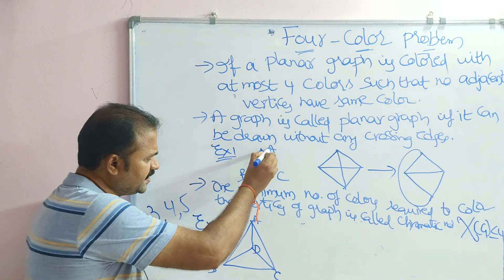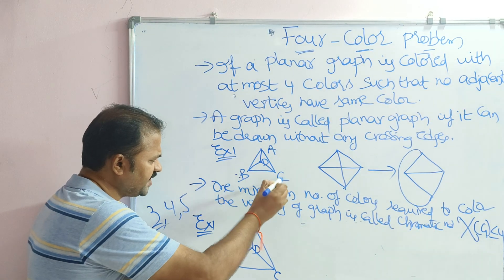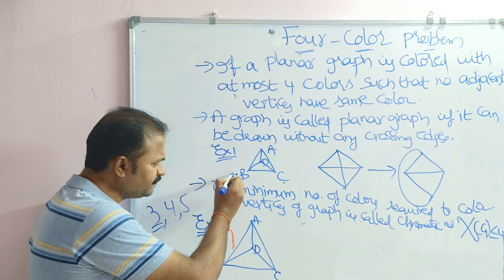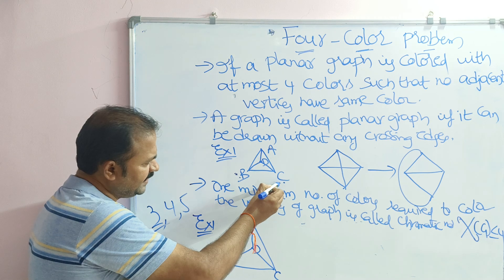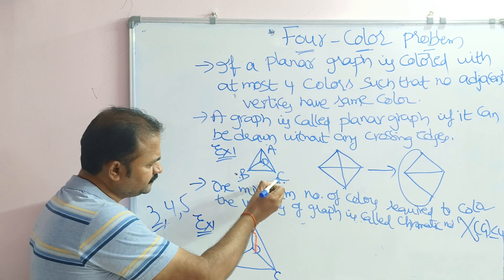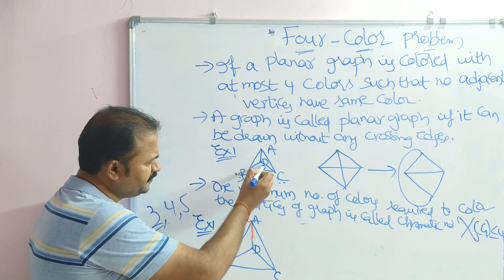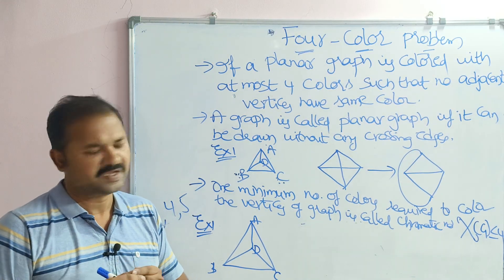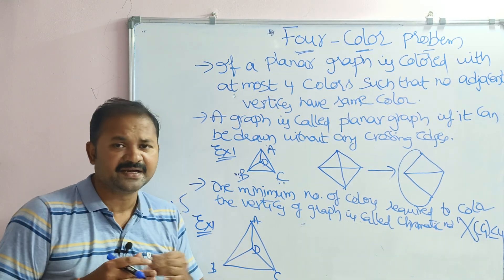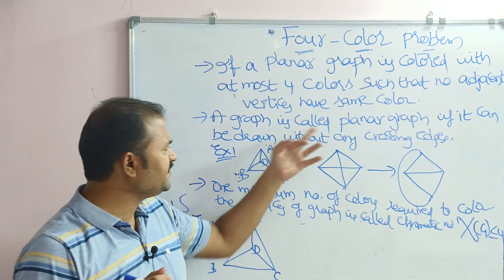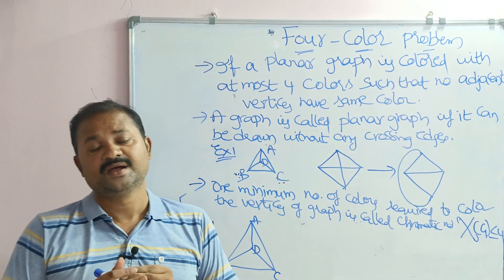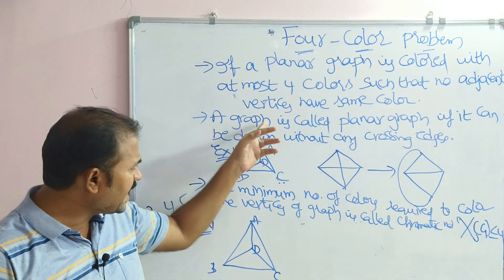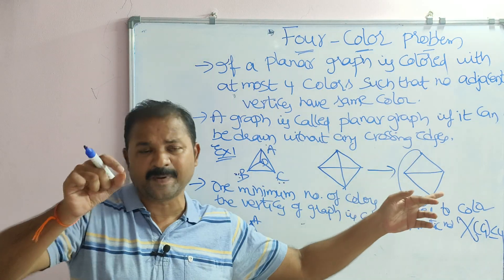For example, consider a graph with four vertices A, B, C, and D. We have edges from A to B, B to C, C to A, C to D, B to D, and A to D. Here, no edges are crossing each other, so we can say this is a planar graph.